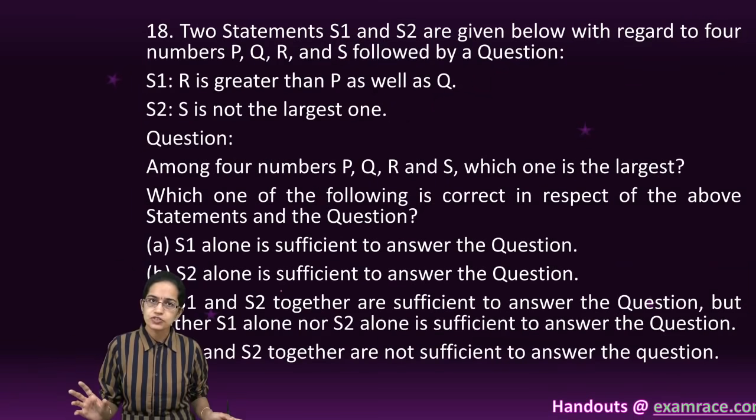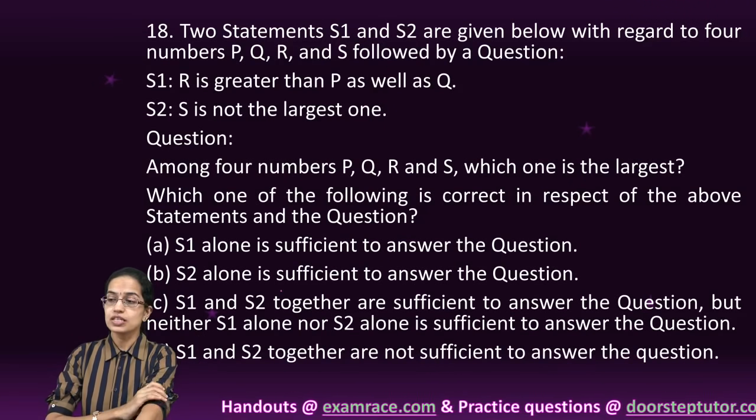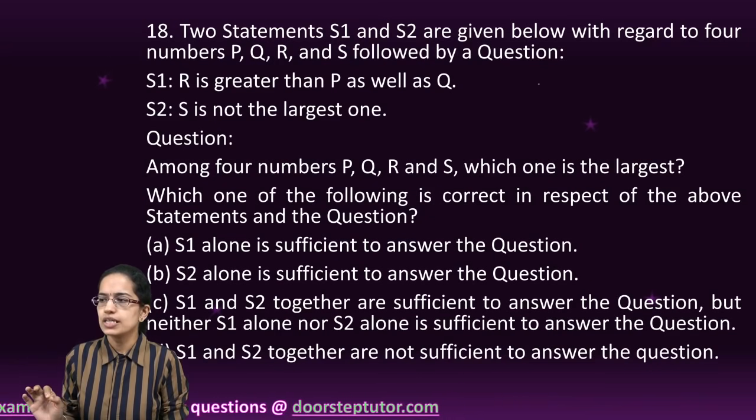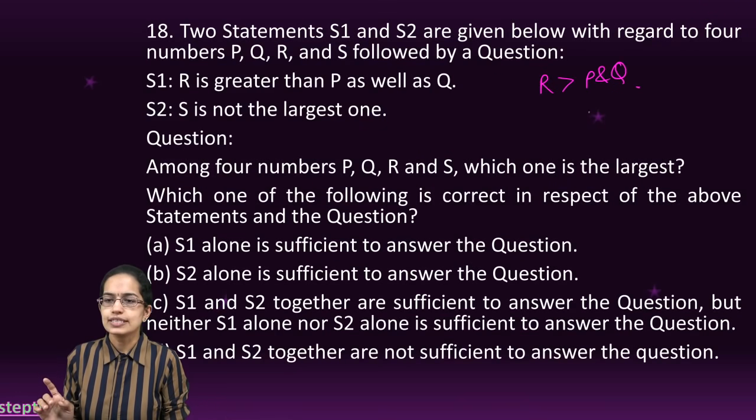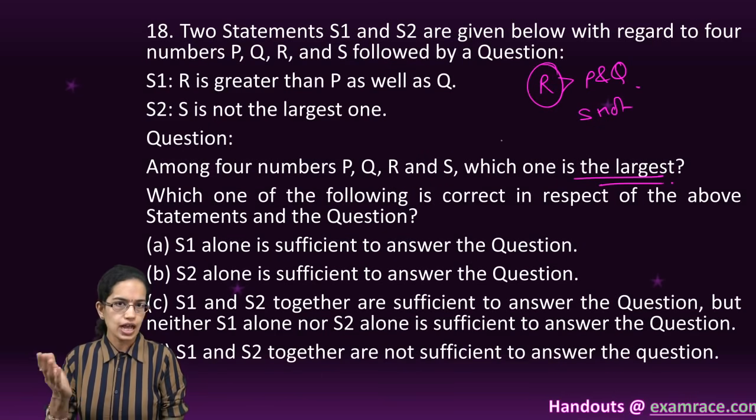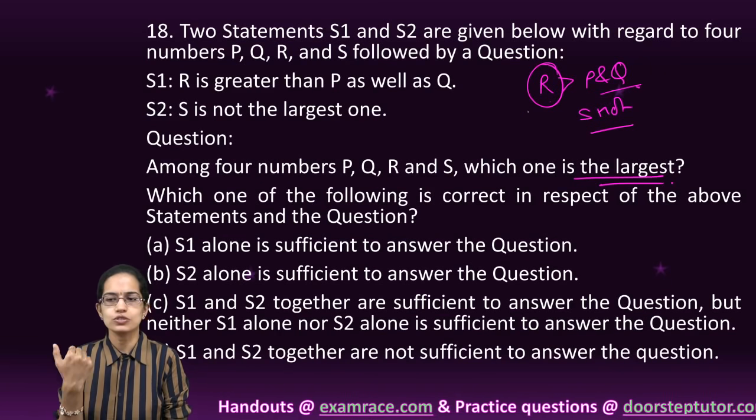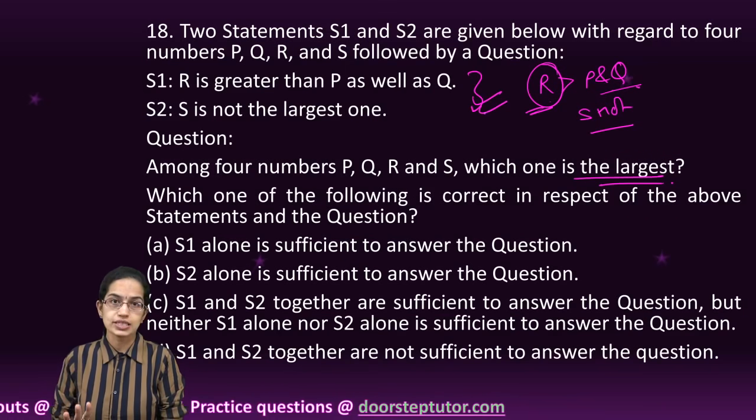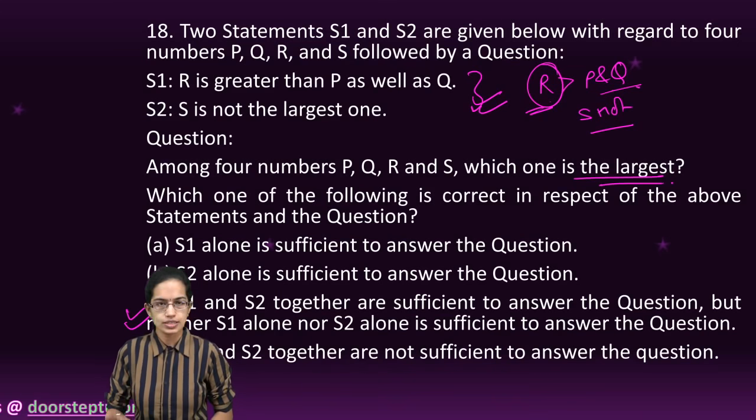These are data sufficiency questions, commonly asked for GMAT but most were very simple. The first one says R is greater than P and Q, and S is not the largest. The question asks which is the largest. Obviously R is the largest since there are only four elements and R is greater than P and Q, while S is not the largest. To explain this, I need both statements. So S1 and S2 together are sufficient to answer the question.